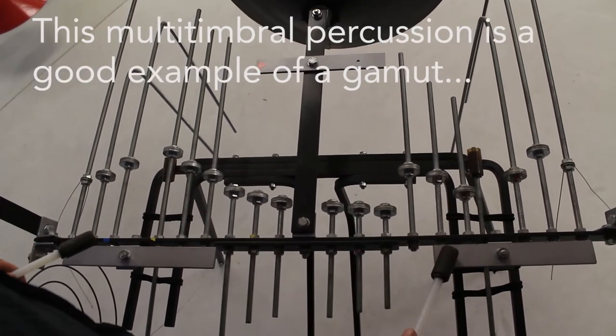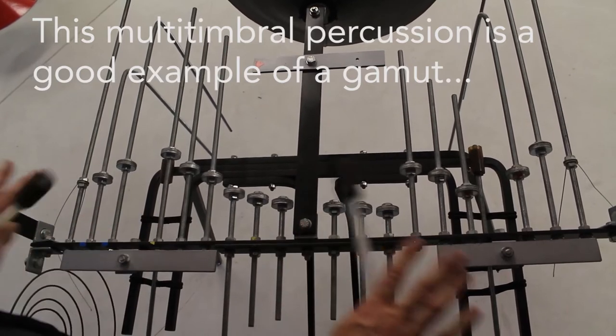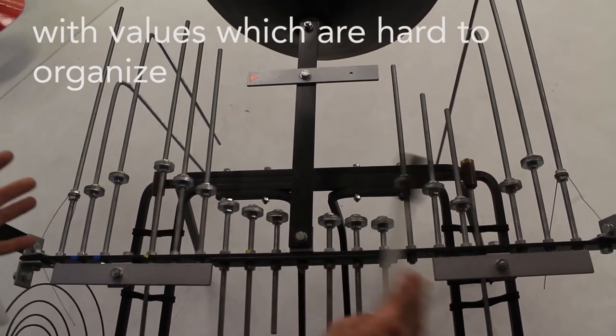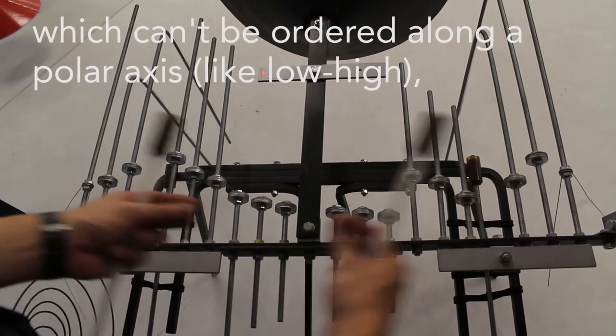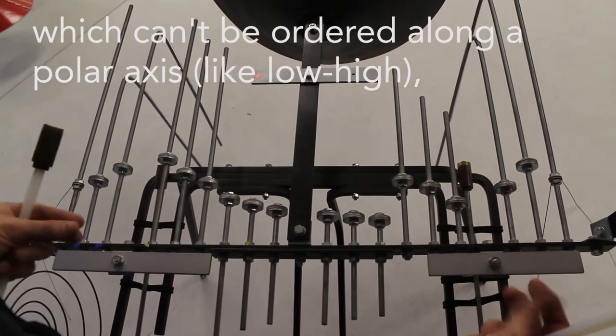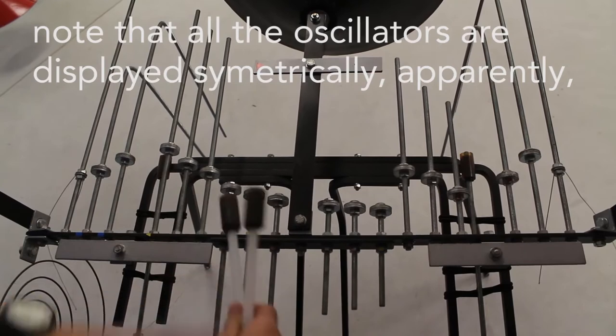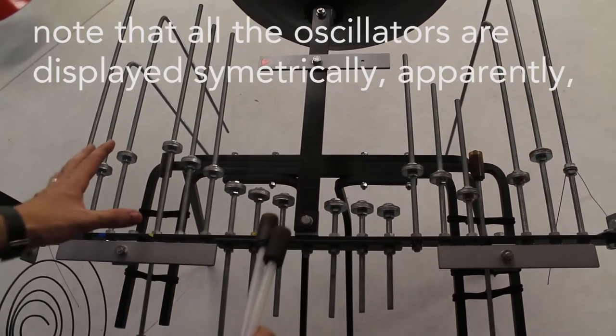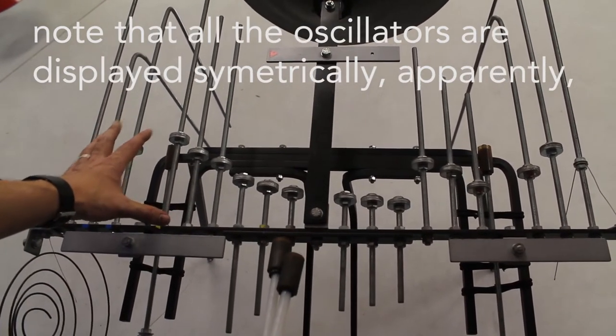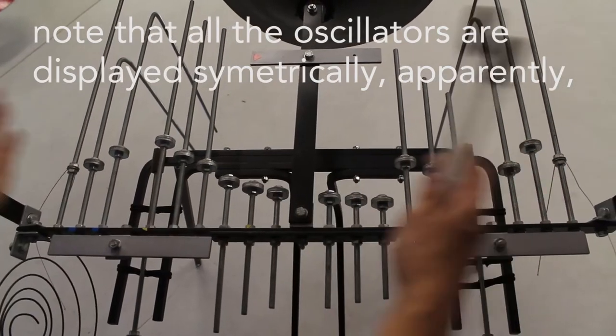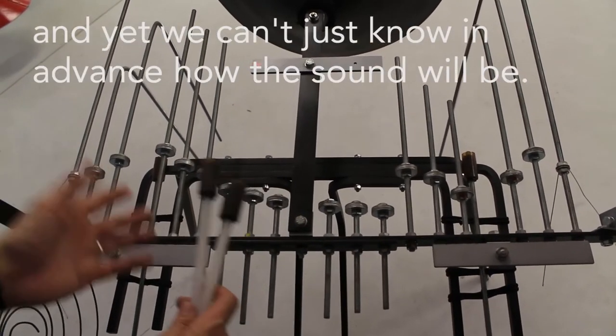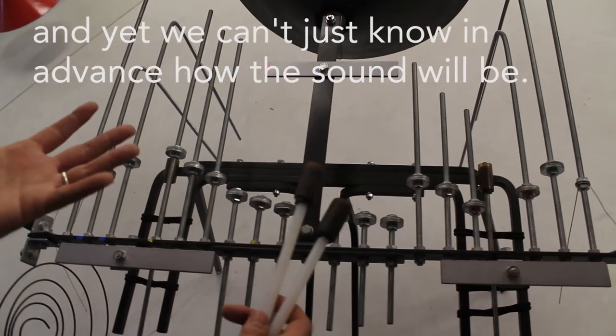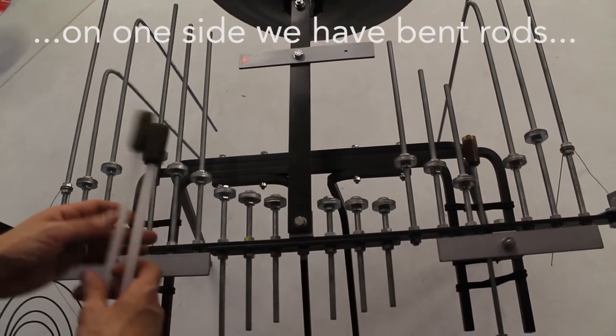Esta percusión multitímbrica es un buen ejemplo de una gama con valores de difícil ordenación, que no se pueden ordenar en un eje polar grave o agudo. Fijémonos que todos los osciladores están dispuestos de una forma aparentemente simétrica y aún así no podemos deducir cuál será su sonoridad. Por un lado tenemos barras curvas.